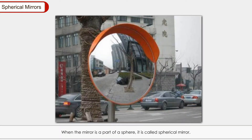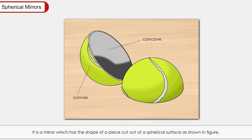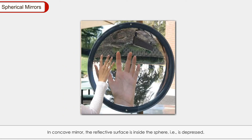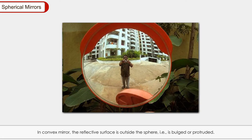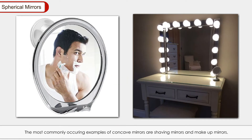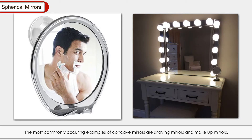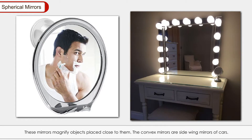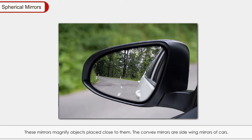Spherical mirrors: When a mirror is a part of a sphere, it is called a spherical mirror — a mirror which has the shape of a piece cut out of a spherical surface. Spherical mirrors are of two types: concave mirror and convex mirror. In a concave mirror, the reflective surface is inside the sphere, i.e., depressed. In a convex mirror, the reflective surface is outside the sphere, i.e., bulged outward. Common examples of concave mirrors are shaving mirrors and makeup mirrors, which magnify objects close to them. Convex mirrors are used as side-wing mirrors of cars, making objects appear smaller than their actual size.